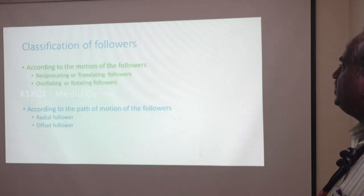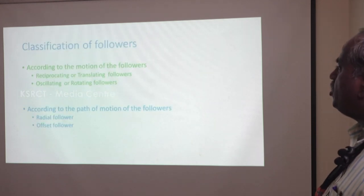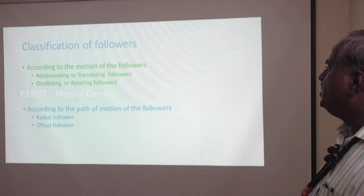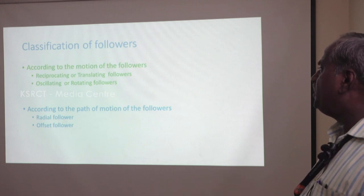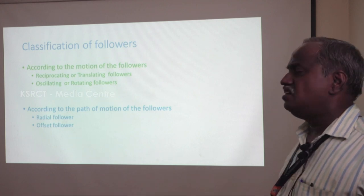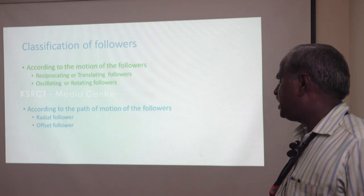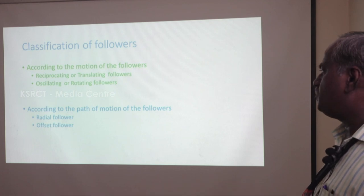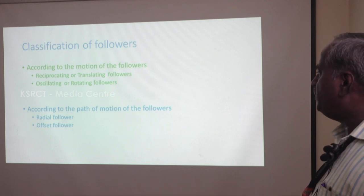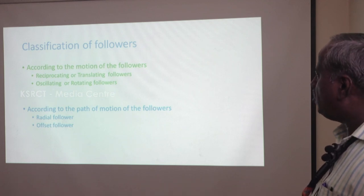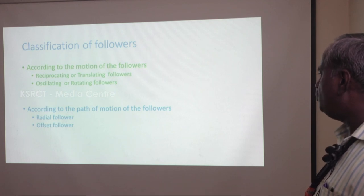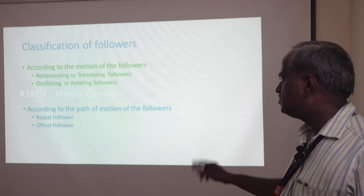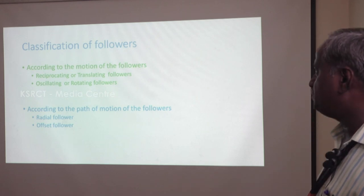The classification of the follower according to its motion: the first is the reciprocating or translating type of follower, and the second one is the oscillating or rotating type of follower. According to the path of motion of the follower, one is called the radial follower and the other one is called the offset follower.